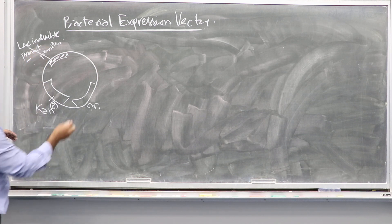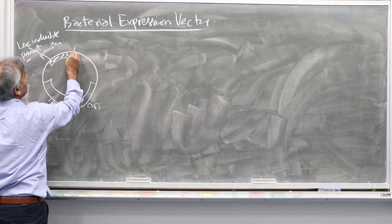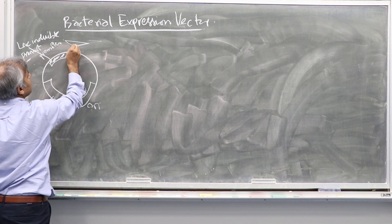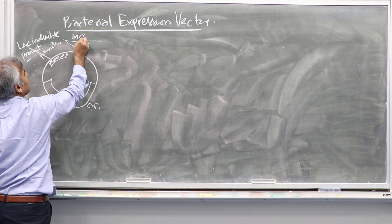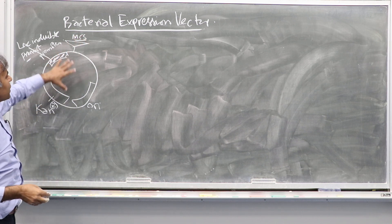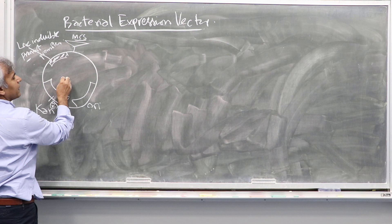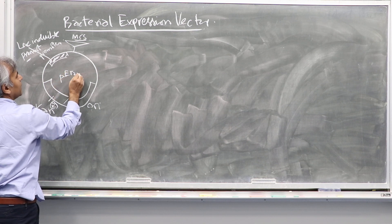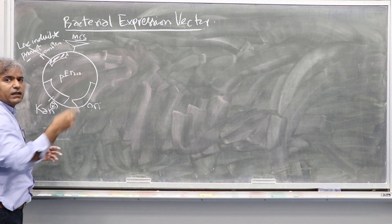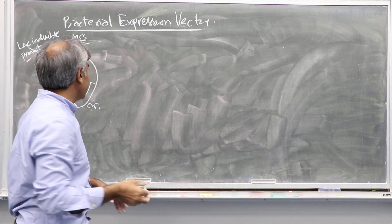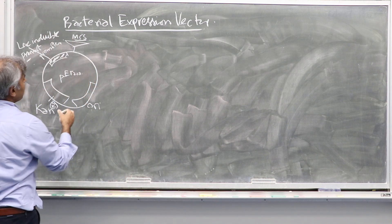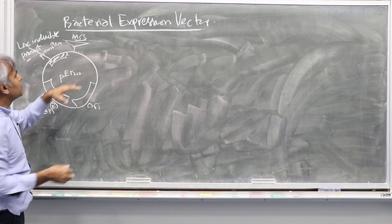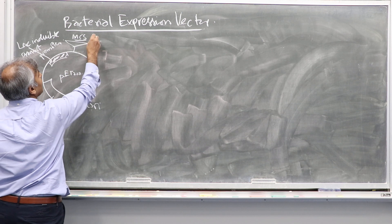Now, in the multiple cloning sites after the promoter, they have transcription termination sites. The multiple cloning sites here - let's say we are using pET vector 21a, this is the name of the plasmid - and this vector will tell you the reading frame.